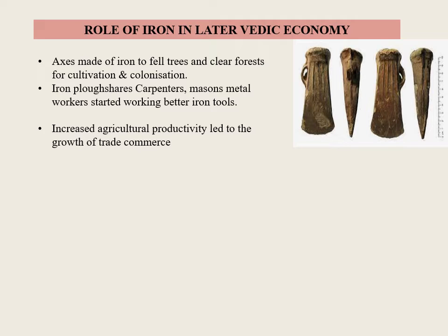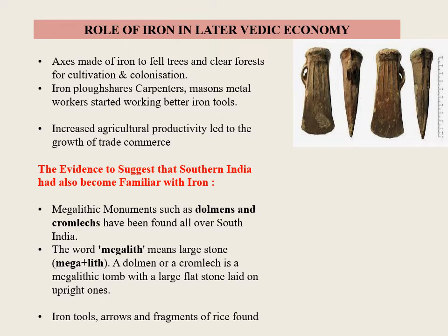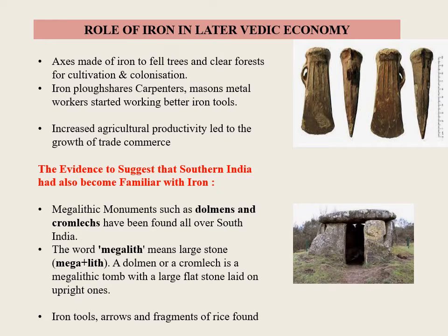This gave momentum to the rise of towns and cities. Evidence suggests that southern India had also become familiar with iron. Megalithic monuments such as dolmens and cromlecs have been found all over South India. The word megalith means large stone, divided into 'mega' and 'lithe.' A dolmen or cromlek is a megalithic tomb with a large flat stone laid on upright ones. Iron tools, arrows, and fragments of rice and other grains have been found beside skeletons in these graves, showing the transition from copper and bronze age culture to the iron age.